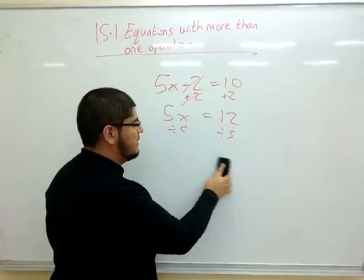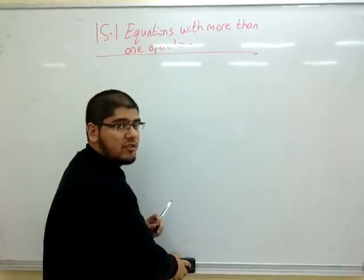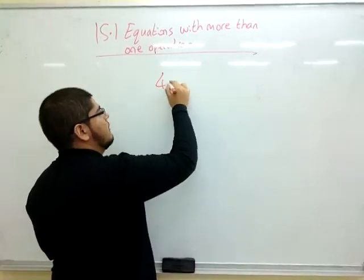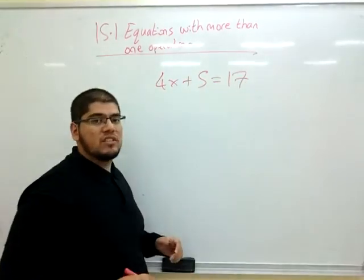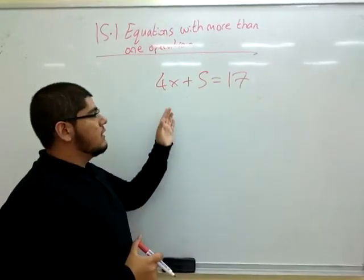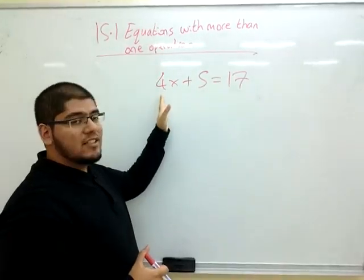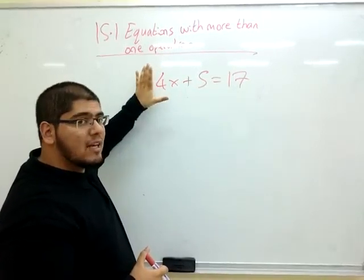So this is basically an operation of two equations. Let's look at another example, 4x plus 5 equals 17. I need to undo the addition first. Because I need to get the 4x by itself, but the x is being multiplied by something, so I'll leave it to the end.